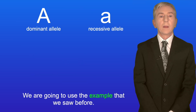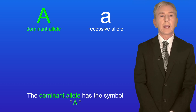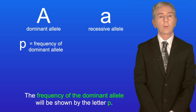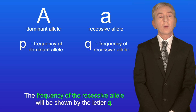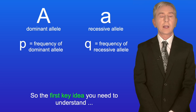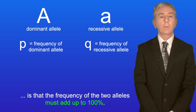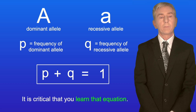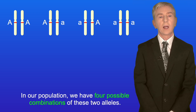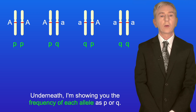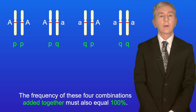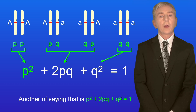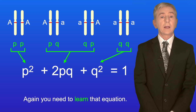We're going to use the example that we saw before. We have a gene with two alleles: the dominant allele has the symbol capital A and the recessive allele has the symbol lowercase a. The frequency of the dominant allele will be shown by the letter p, and the frequency of the recessive allele will be shown by the letter q. Now we're looking at two alleles, so the first key idea is that the frequency of the two alleles must add up to 100%. Another way of saying that is p + q = 1, and it's critical that you learn that equation. Now in our population we have four possible combinations of these two alleles, and I'm showing you those here with the frequency of each shown as p or q. The frequency of these four combinations added together must also equal 100%, and another way of saying that is p² + 2pq + q² = 1 — and again you need to learn that equation.